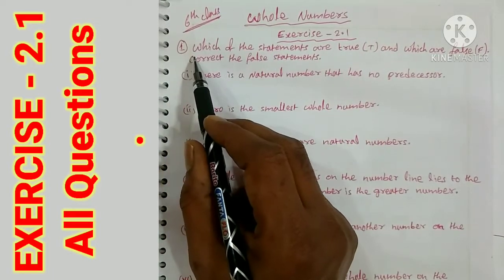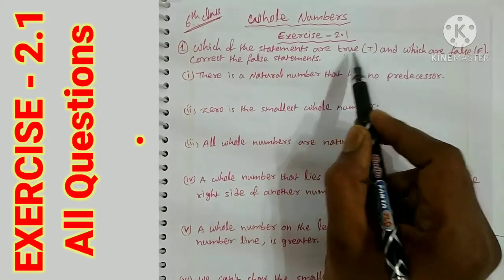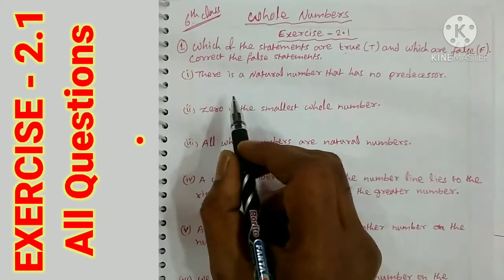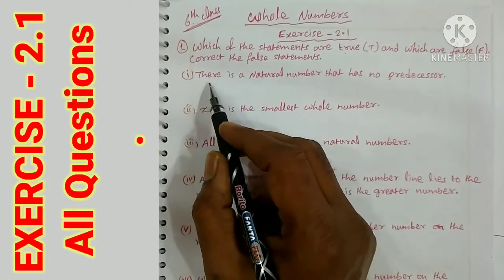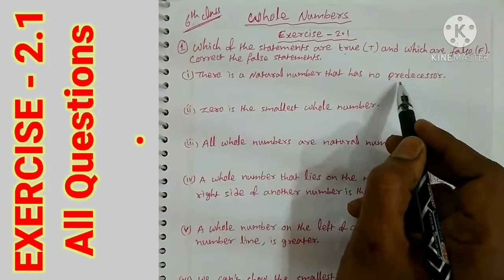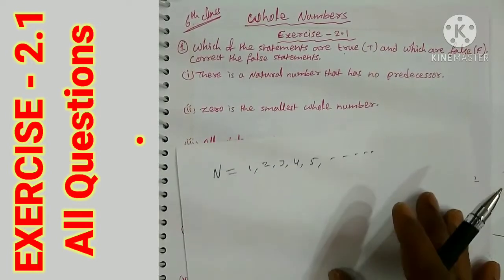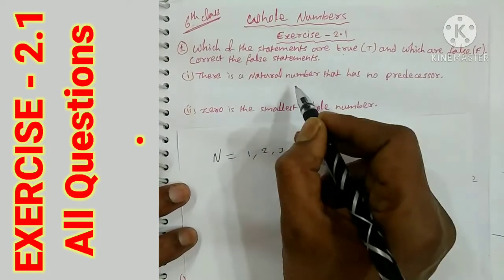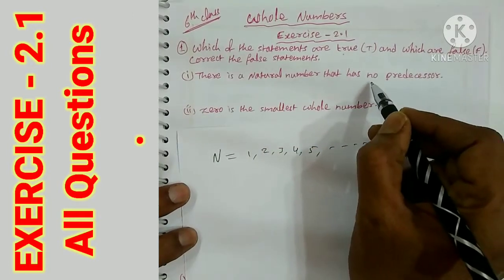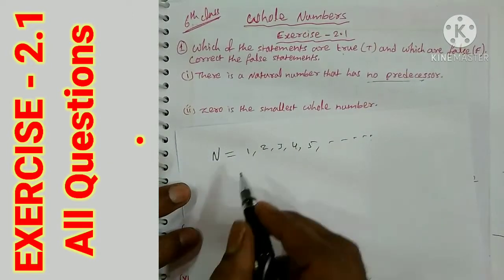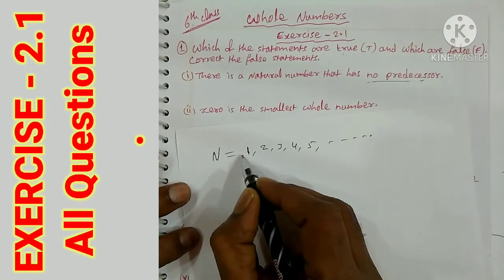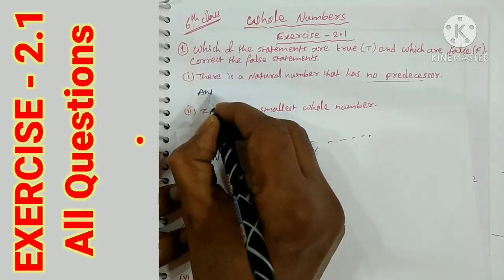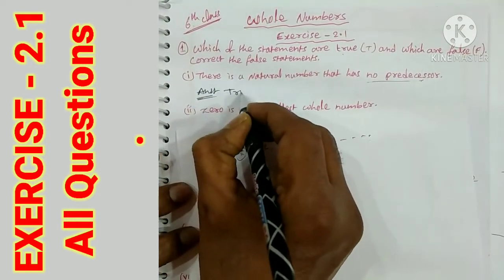The first question asks which statements are true and which are false, and to correct the false statements. First bit: there is a natural number that has no predecessor. Natural numbers are 1, 2, 3, 4, 5, etc. The number 1 does not have a predecessor — no number comes before 1. So this statement is true.